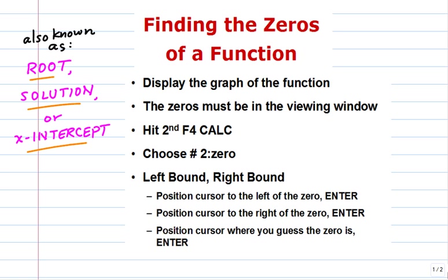The graphing calculator really helps visualize this nicely. Here are the steps: display the graph and make sure you can see the zero in the viewing window, go to the calculate menu and choose number two (zero), and then define a left-bound and right-bound that contains the zero inside it.